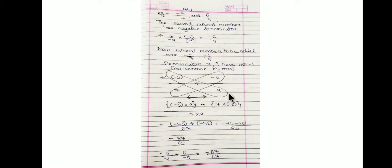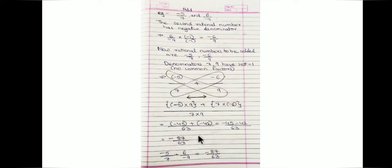This gives us minus 45 minus 42 over 63, which equals minus 87/63. So the sum of the two given rational numbers is minus 87/63.